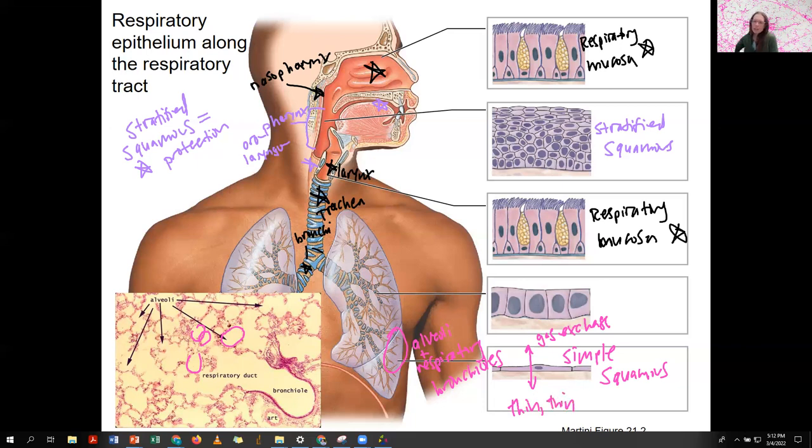In between the respiratory mucosa and simple squamous is cuboidal. Not really something I'm ever going to talk about again. We have to transition from one tissue type to another. That's in the conducting bronchioles and smaller bronchioles. Simple cuboidal.